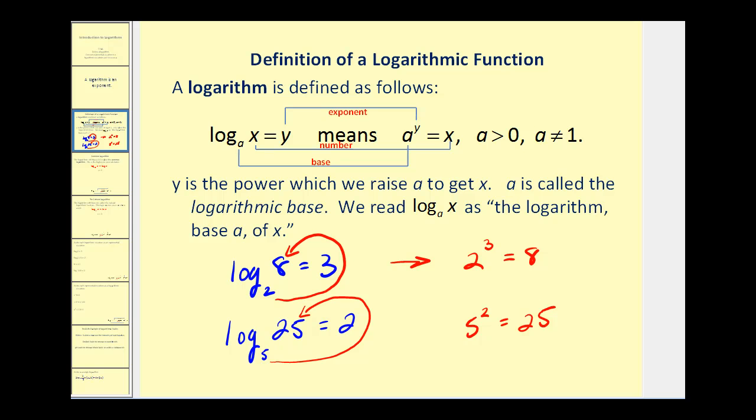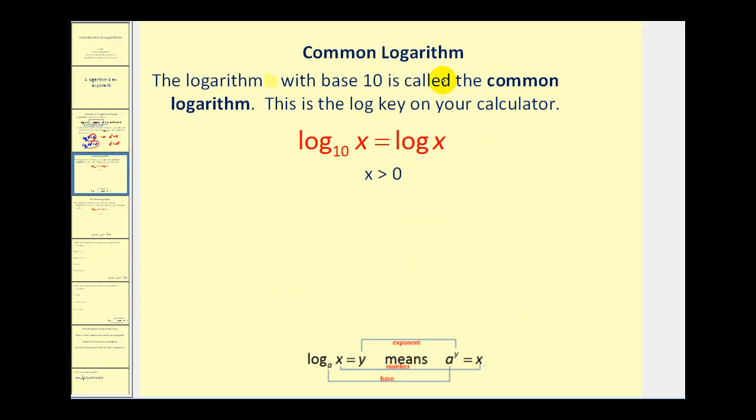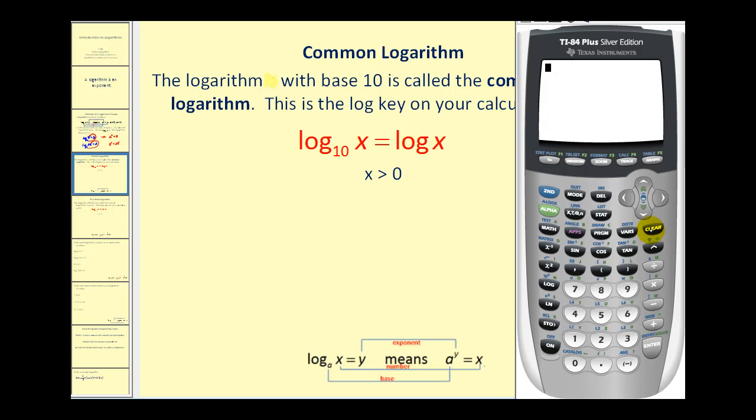But let's go ahead and talk about common log and natural log, because these are the two logs that you'll find on your calculator. The logarithm with base ten is called the common log. This is the log key on your calculator. If it's base ten, we leave the base off. So if you have your calculator and press log ten thousand, this is equal to four.